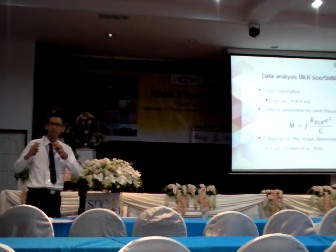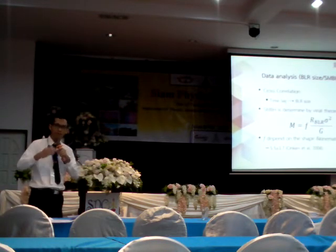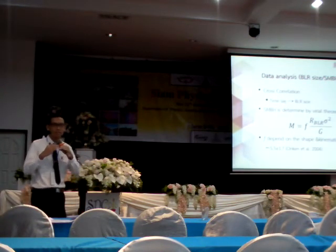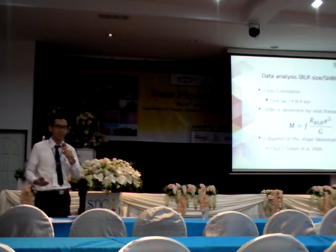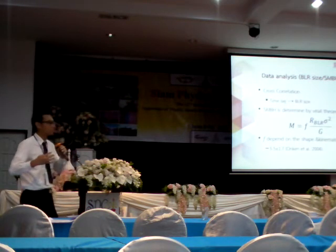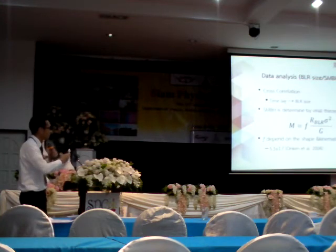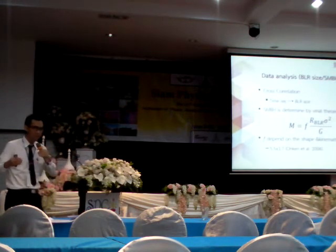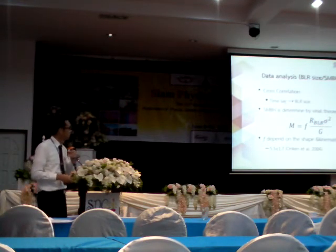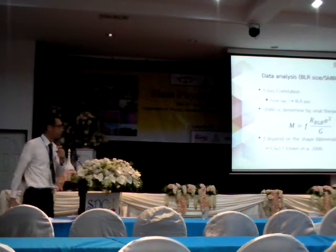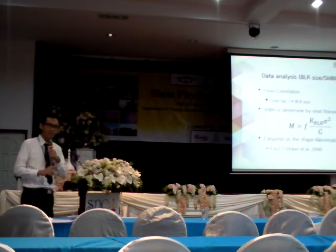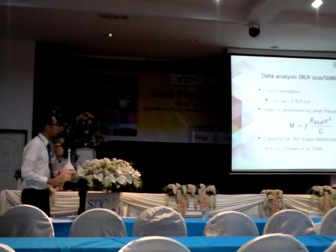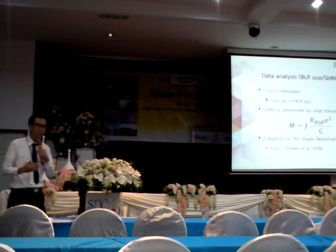After we obtained the light curves — both broadband and narrowband — we used cross-correlation to obtain the time lag between the two signals. This time lag is directly proportional to the broad-line region size by a factor of C, the speed of light. Now that we have obtained the broad-line region size and we use the spectra obtained before, the supermassive black hole mass is defined by the virial formula: M equals R_BLR times sigma-squared divided by G. The R_BLR is the time lag size we got, and sigma-squared is the velocity dispersion obtained from the spectra. The factor F is just a constant — a lot of studies in the past would take this as unity equal to one, however more recent studies, for example Onken 2004, take it as 5.5. This depends on the kinematics and also the shape of the broad-line region.